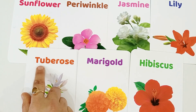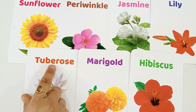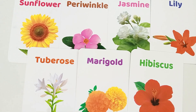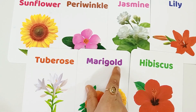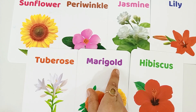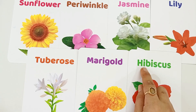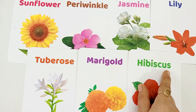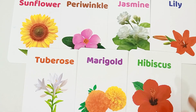T for Tuberose, T-U-B-R-O-S-E, Tuberose. Tuberose is also a flower. M for Marigold, M-A-R-I-G-O-L-D, Marigold. This is Marigold. Marigold is also a flower. H for Hibiscus, H-I-B-I-S-C-U-S, Hibiscus. Hibiscus is also a flower.